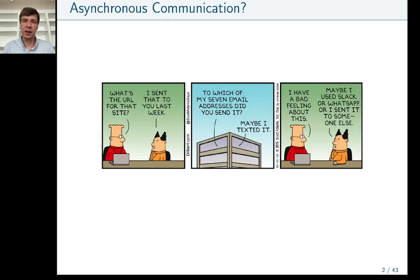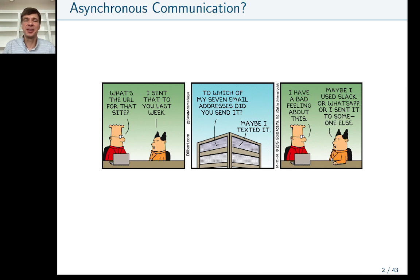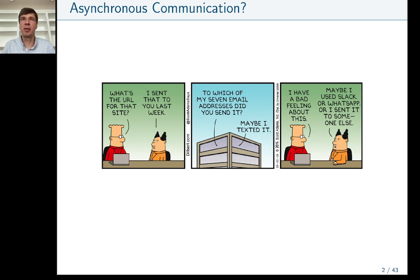To get started, we talk about asynchronous communication. Looking at this Dilbert comic, Dilbert asked the boss for a URL, the boss said he sent it last week but didn't know where — suggesting WhatsApp or Slack. This refers to asynchronous communication, where we don't have a synchronous round-robin meeting but instead communicate via Slack, WhatsApp, messages, or email, responding at our leisure.